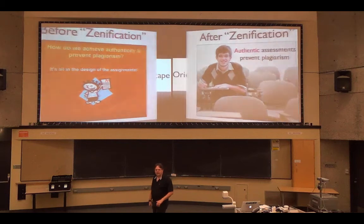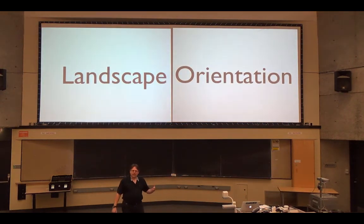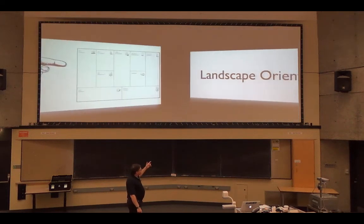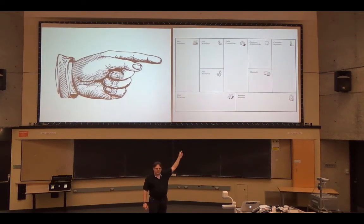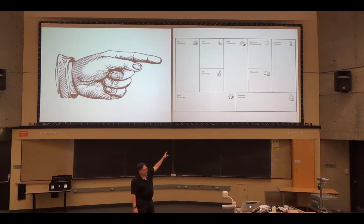We have this canvas, which has got this massive landscape orientation. So we can leverage that for content that is by nature landscape. So for example, I teach business. One of the tools we use is the business model canvas. Here it is here, landscape orientation.